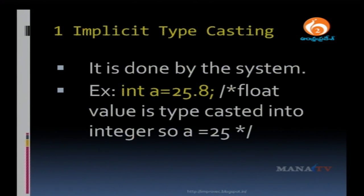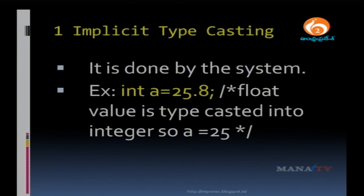25.8 is converted into integer — only 25 is stored into A. The value after the decimal point is ignored because in integer type decimals are not allowed. The float value is type casted into integer, so A equals 25.